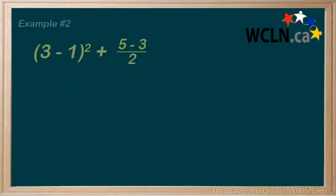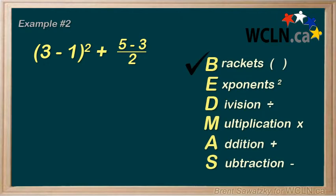Second example, slightly more challenging. 3 minus 1, all in brackets squared, plus 5 minus 3 over 2. So, we start off with brackets. Well, we have 3 minus 1 clearly in brackets, so we can subtract that for a 2 squared.